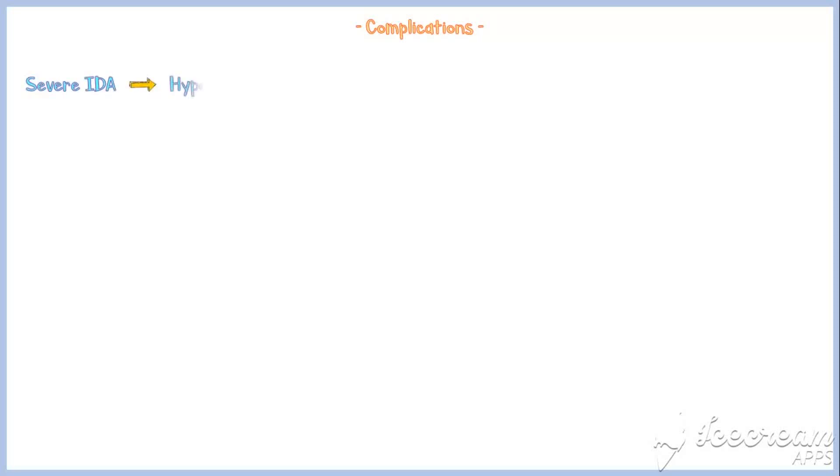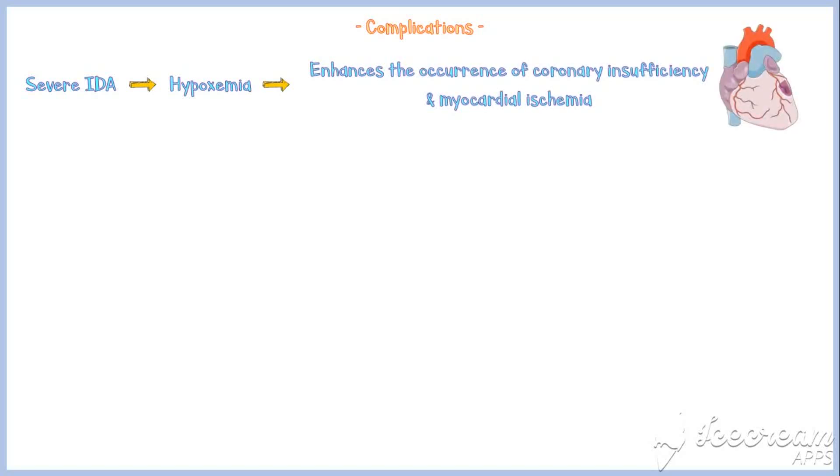Although iron deficiency anemia is an easily treated condition, sometimes it may lead to serious complications. Severe iron deficiency anemia may cause hypoxemia, which enhances the occurrence of coronary insufficiency and myocardial ischemia.